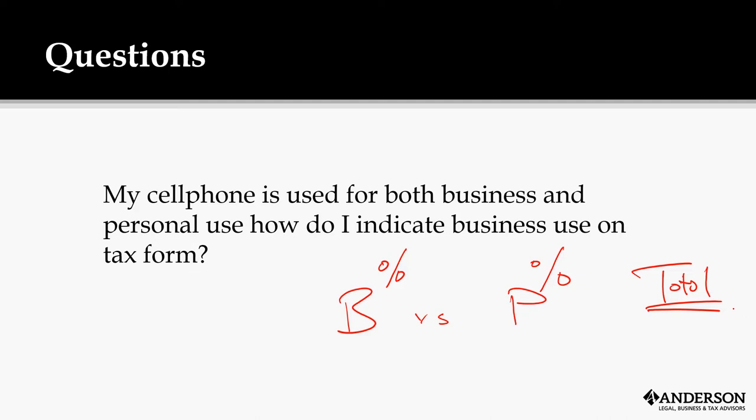Now if you are one of those people, then you need to be tracking this. That personal percentage, you can't say it's all 100% business. It's just impossible unless you have two cell phones. You can say here's my business phone, here's my personal phone, or you have two lines, in which case you're going to write off a portion.